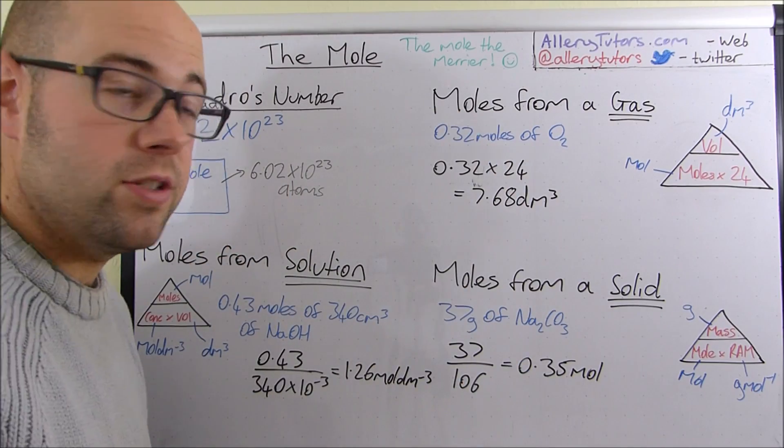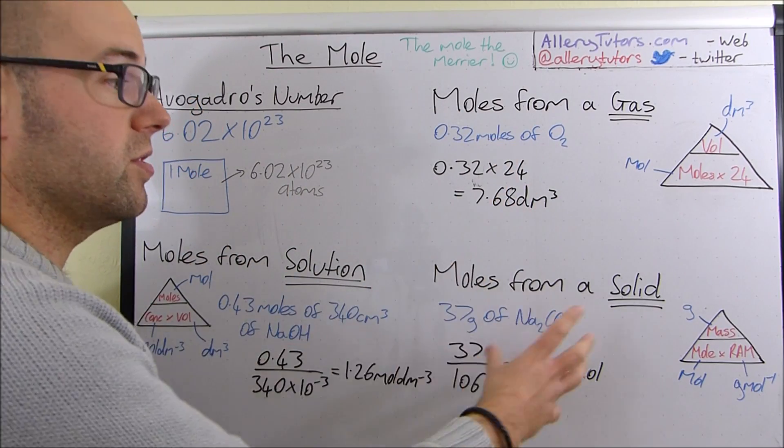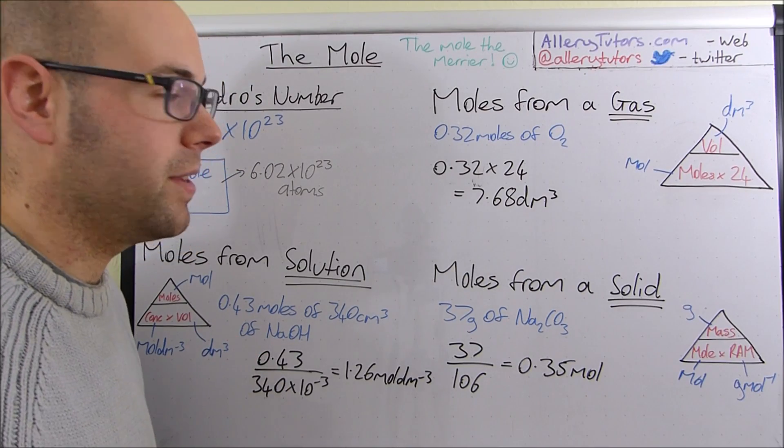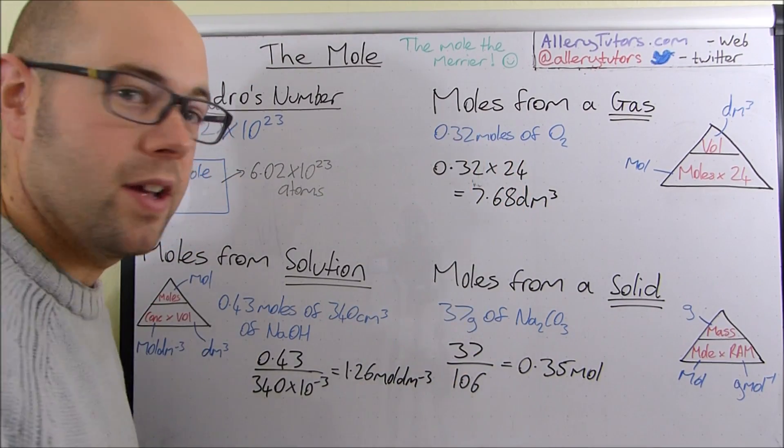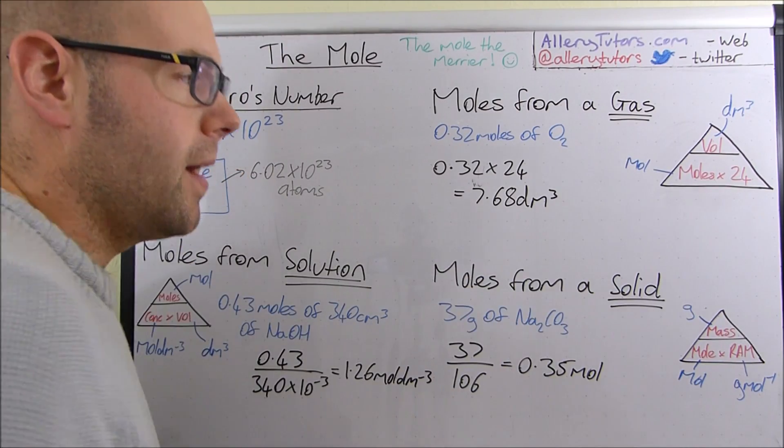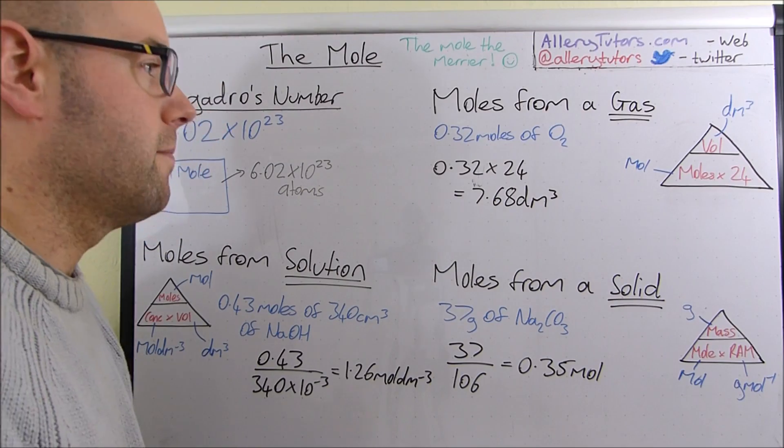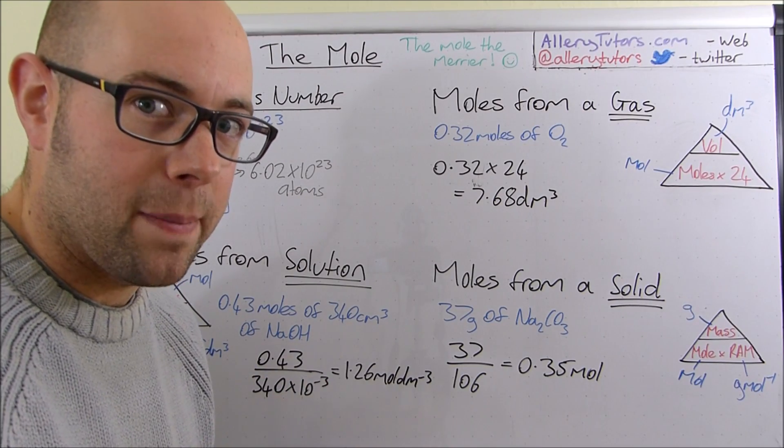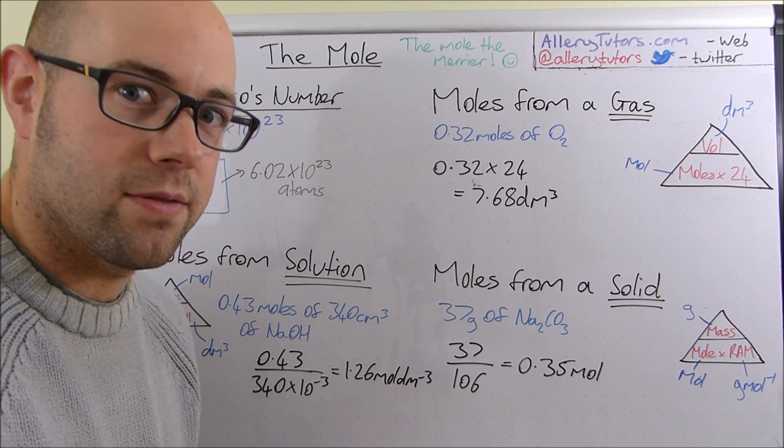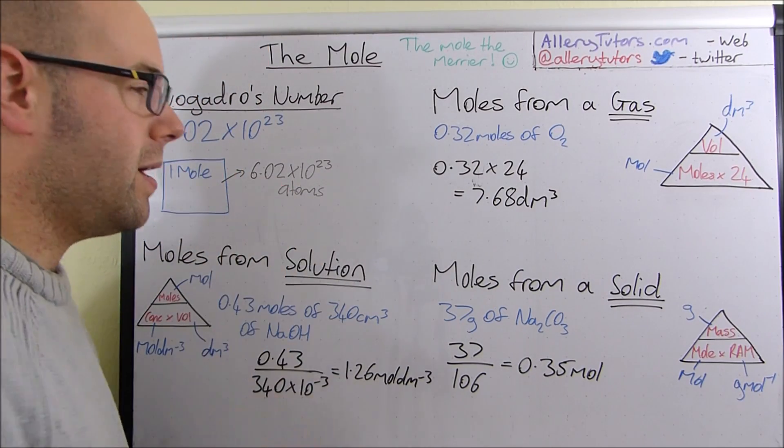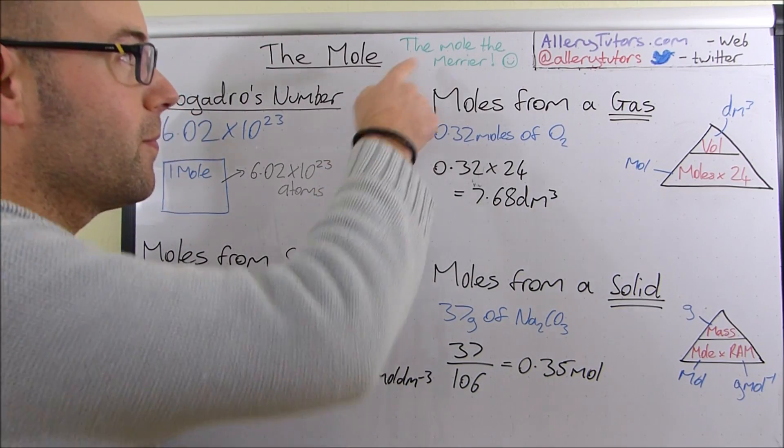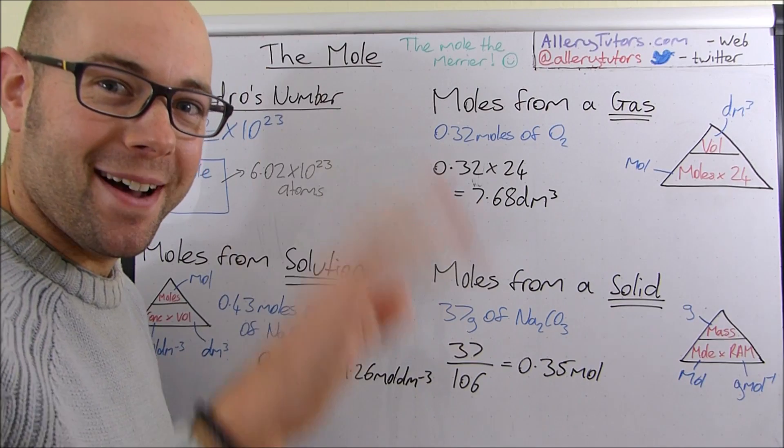So, make sure you know all your mole equations. Make sure you know them for gases, solutions and solids. Also for gases, you've got ideal gas equations. Don't forget that one. That's used when you don't have a volume or a pressure that is standard. Remember, standard pressure is 100 kilopascals and standard temperature is 298 Kelvin. That's 25 degrees Celsius. And make sure you know what Avogadro's number is. And that's pretty much it. So, the mole, the merrier. Bye-bye.